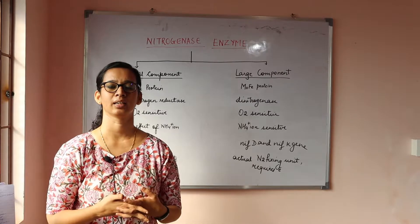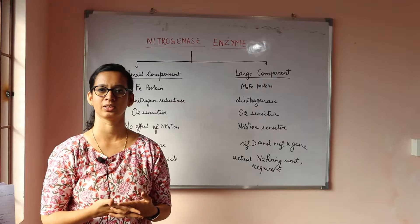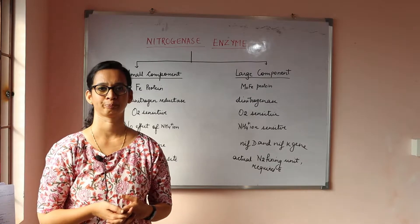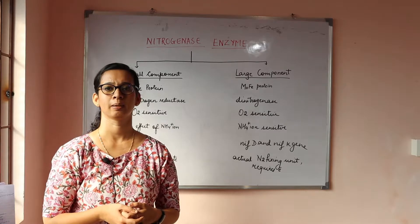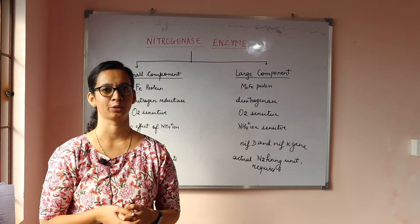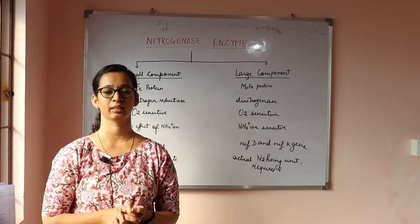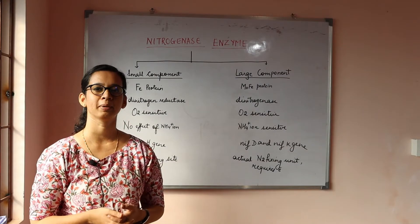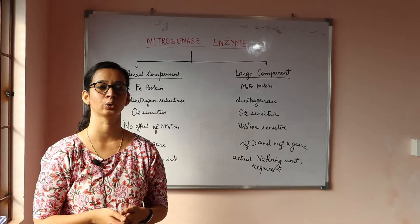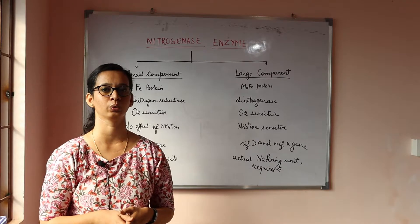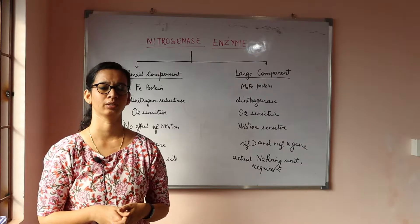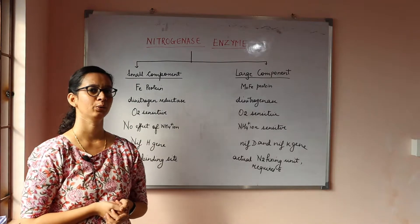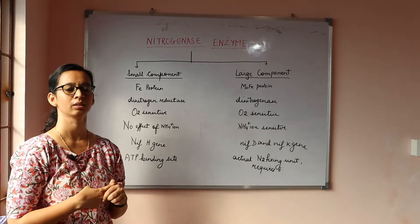Bacteria convert atmospheric nitrogen into a form that can be easily utilized by plants. Symbiotic, as the name suggests, is a mutual partnership between plants and bacteria. Plants provide nourishment to bacteria, whereas bacteria have the enzyme nitrogenase which converts atmospheric nitrogen into ammonia. Plants also provide the niche and fixed carbon required for bacterial growth, while bacteria provide the converted nitrogen for plant uptake.